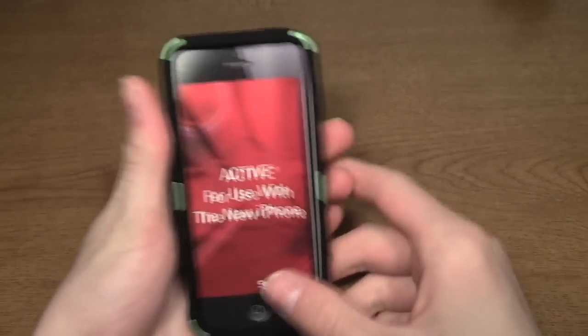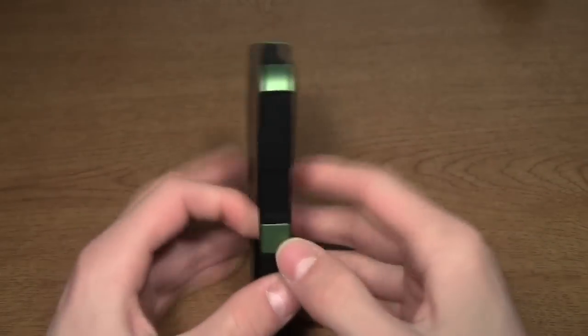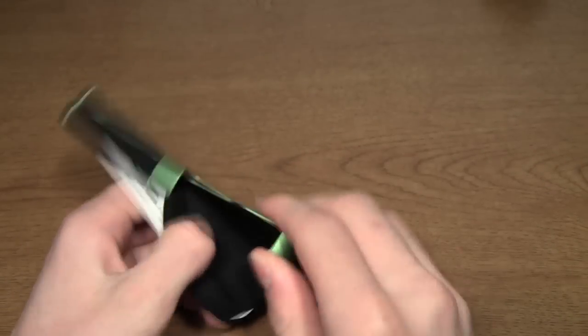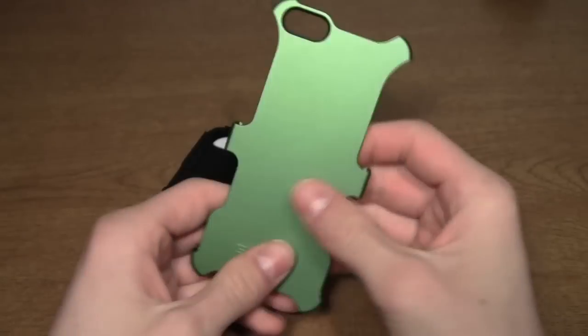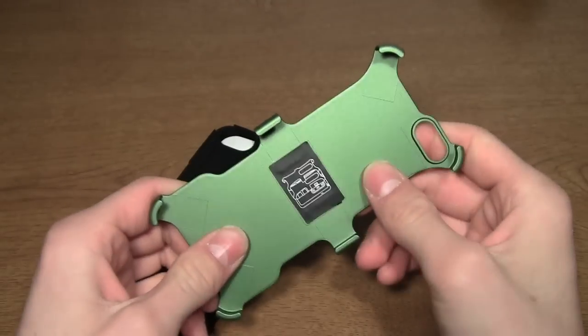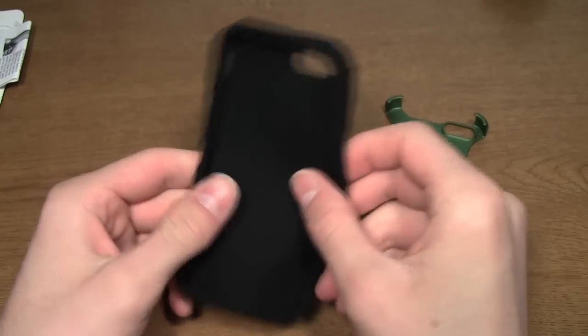Let's just get rid of the holster for a second. Alright this is the Active for use with the new iPhone and what this case is is basically a two-piece accessory. You have this soft touch sort of plastic material that goes outside and then you have a more flexible silicone case that goes inside.